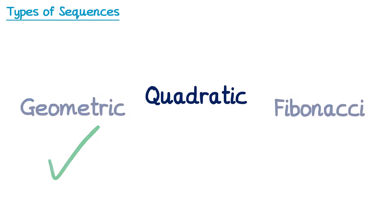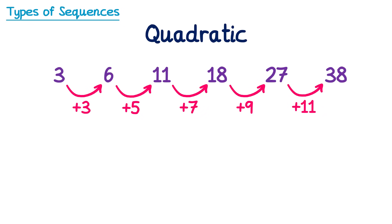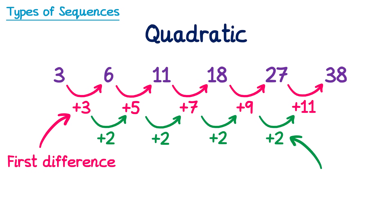We've looked at geometric sequences; now let's look at quadratic sequences. This sequence is quadratic — here's why. We work out the differences between consecutive terms: add 3, add 5, add 7, add 9, add 11. These are called the first differences. If all first differences were the same, the sequence would be linear — but they're not. However, if we look at the differences between the first differences: 5−3=2, 7−5=2, 9−7=2, 11−9=2. These equal values are called the second differences. If the second difference is always the same, the sequence is quadratic.